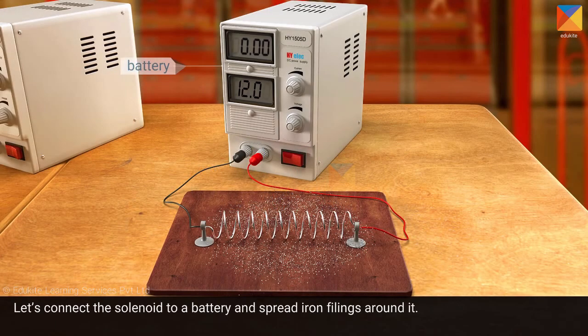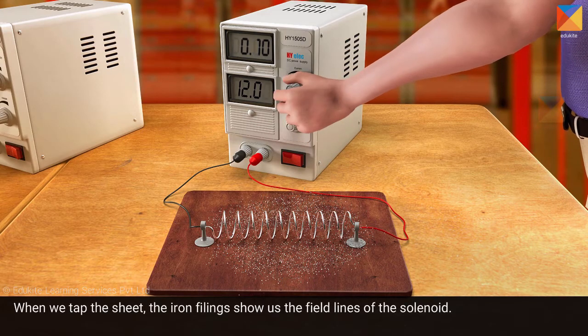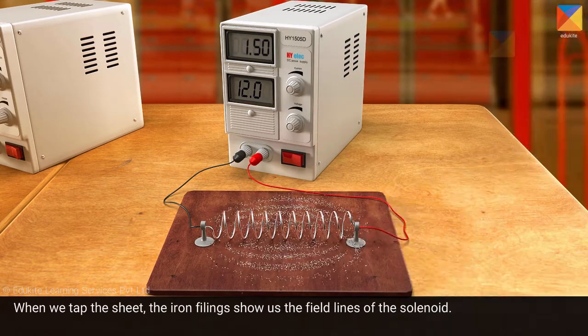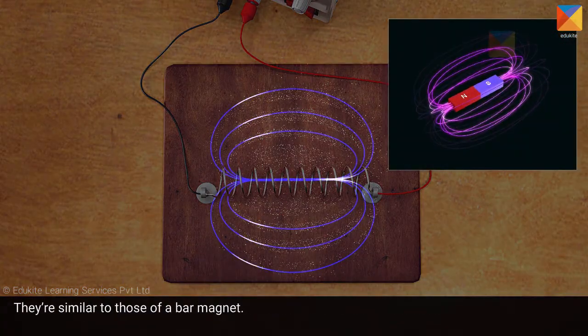Let's connect the solenoid to a battery and spread iron filings around it. When we tap the sheet, the iron filings show us the field lines of the solenoid. They are similar to those of a bar magnet.